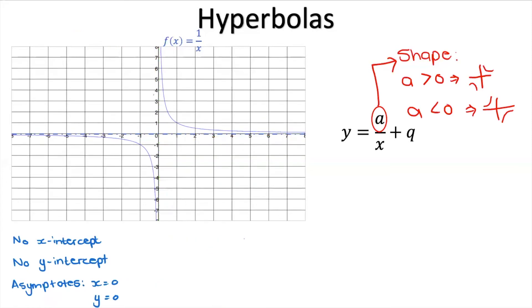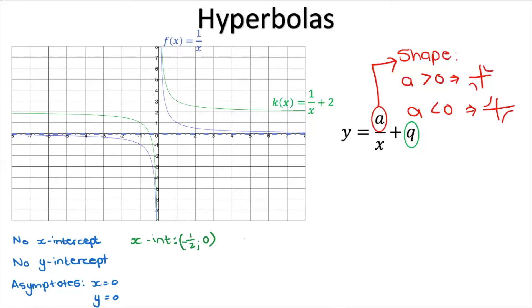Now we know a has an impact on shape. But what about the q value? Let's plot graphs with different q values. With q = 2, k(x) = 1/x + 2 shifts the graph up by 2. Now we have an x-intercept at (negative 1/2, 0) because it crosses the x-axis. There's still no y-intercept. The asymptotes are x = 0 and now y = 2 — the horizontal asymptote became y = q.